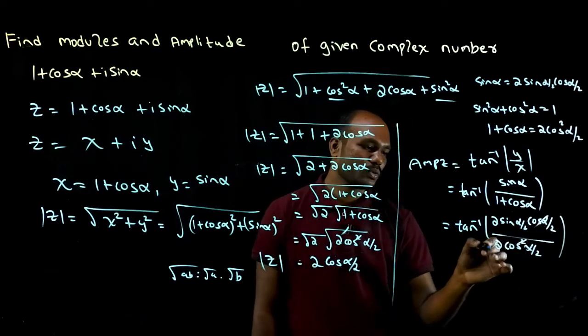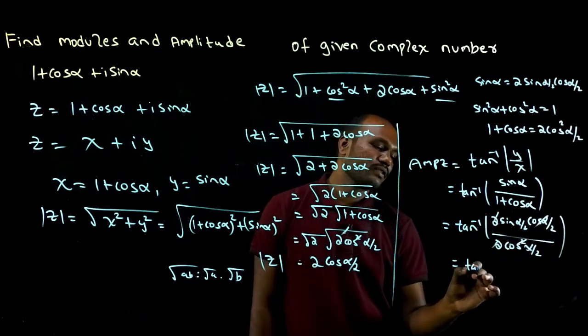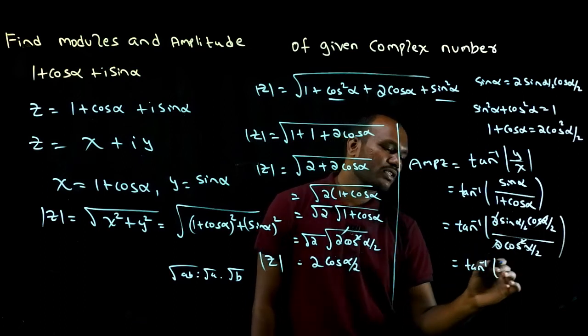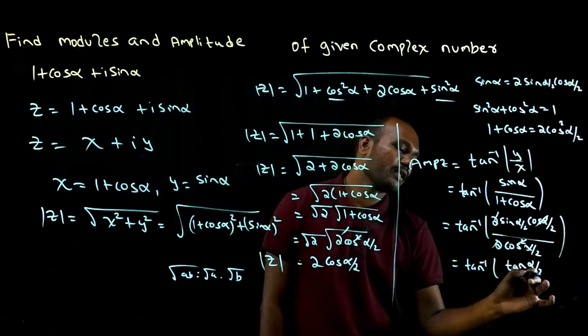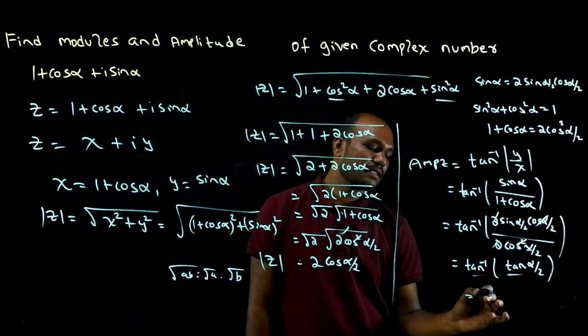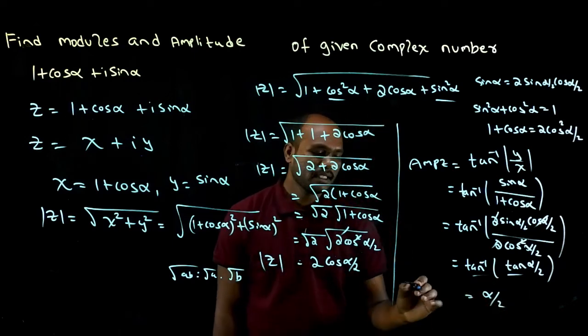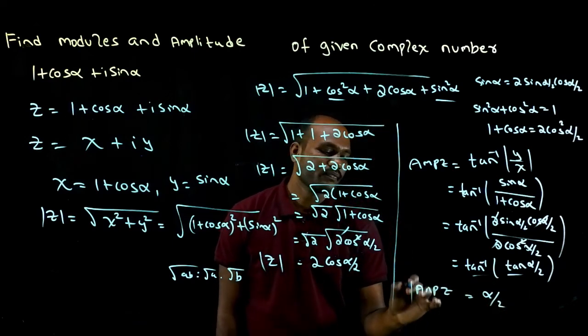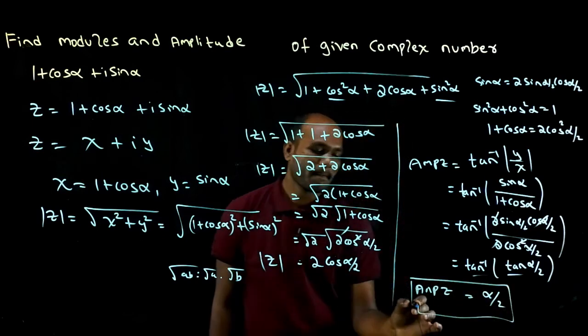The squares cancel, the 2s cancel. So tan inverse of sine by cos is tan alpha by 2. The tan and tan inverse cancel, giving alpha by 2. This is the amplitude of Z.